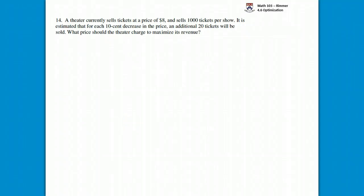A theater currently sells tickets at a price of $8 and sells a thousand tickets per show. It's estimated that for each 10 cent decrease in price, an additional 20 tickets will be sold. The question is, what price should the theater charge to maximize its revenue?